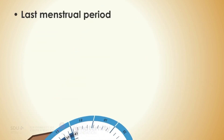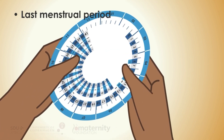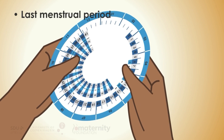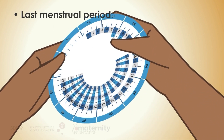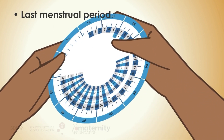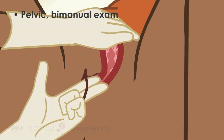1. For women confident of the last menstrual period dates, you can usually calculate the gestational age using the last menstrual period alone. However, it is recommended to verify the gestational age by vaginal examination or, even better if available, by vaginal ultrasound. If there is any doubt about the last menstrual period, this must be done before planning the abortion.